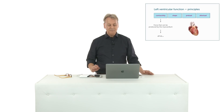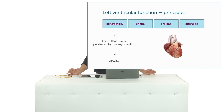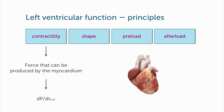Before we start talking about how to quantify left ventricle function, you have to understand which factors actually influence the way the heart functions. We have to look at myocardial mechanics and hemodynamics. Here are some of the factors that influence how the heart works. First of all, contractility, which is basically the force that is produced by the myocardium. We can measure it with the help of dP/dt, which is the change in pressure in relationship to time.